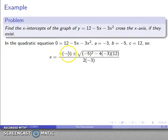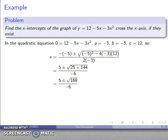x equals negative b plus or minus square root b squared minus 4ac all over 2 times a. And so after the dust settles here, this is going to be 5 plus or minus square root 169 over negative 6.